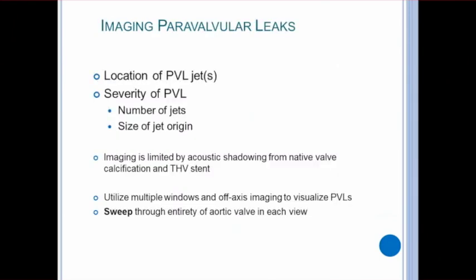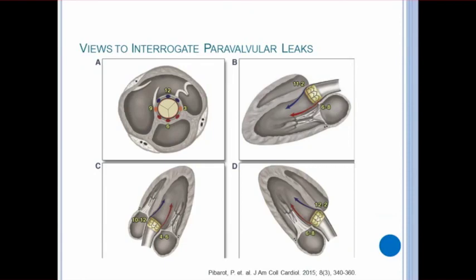It's crucial to look for any paravalvular leaks. There is a high mortality rate in TAVR patients with even mild paravalvular regurgitation. Regurgitant jets are typically eccentric, irregularly shaped, and often multiple, so sweeping through the plane of the aortic valve in multiple views is critical. Acoustic shadowing from the native valve or bioprosthesis can make it challenging to find paravalvular leaks, especially those posterior to the valve in the short axis view. This is why it's important to use all possible views of the aorta. To interrogate the posterior side of the valve, the long axis views can be very useful. Scanning the parasternal long axis, the apical 5, and apical 3 chambers can provide the proper angulation to evaluate the entire posterior side of the valve for paravalvular leaks. Sweeping completely through the valve in each view is a must.